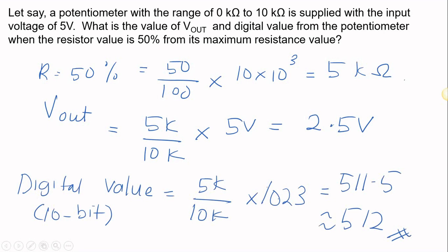The digital value for this voltage level is the value of this resistance ratio times the highest maximum bit of this ADC, which is 1023, and then you will get 511.5 or approximately 512 or 511.